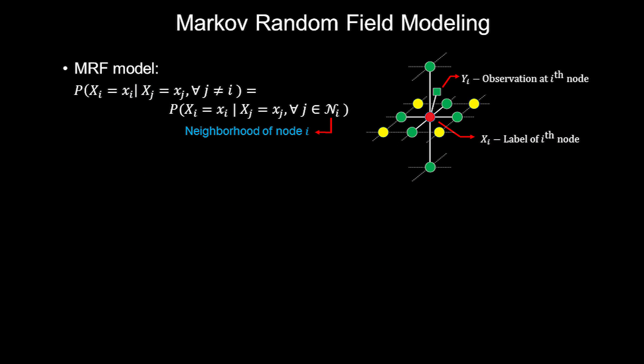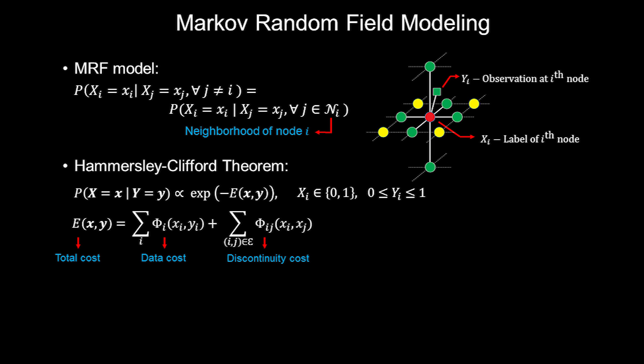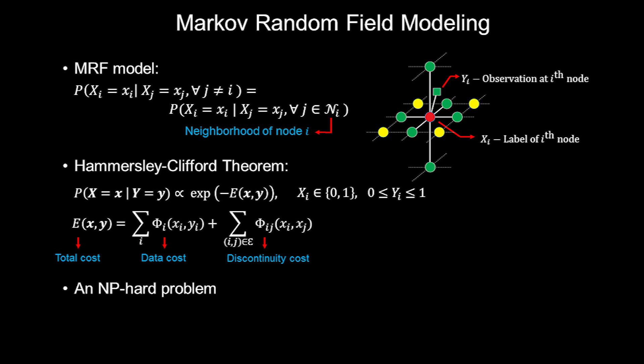Next, we model the 3D space of interest as a Markov random field to capture the spatial dependencies. Then, by using the Hammersley-Clifford theorem, we can write the conditional probability of x given y as follows. Finding a solution that maximizes this probability is an NP-hard problem, however. We then use loopy belief propagation to efficiently find an approximated solution.